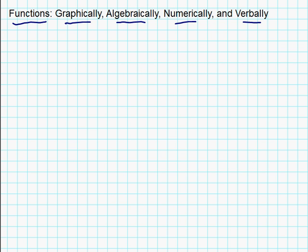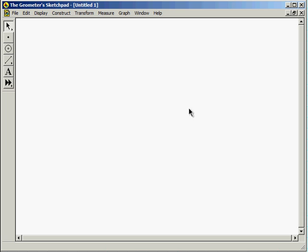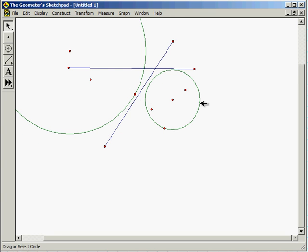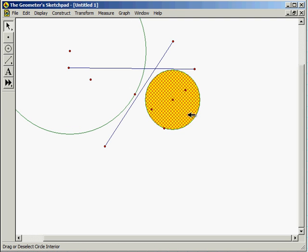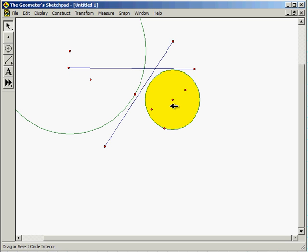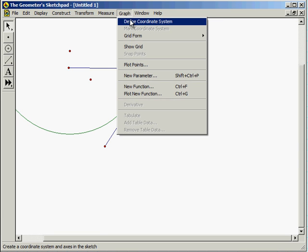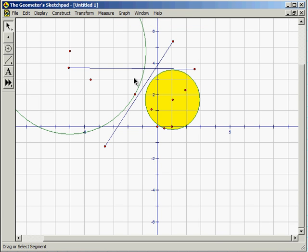Another one is Geometer Sketchpad. Now I've been using this for a number of years and this one is a commercial product. You can put points where you want, you can put line segments, circles, like for instance if I want to take the interior of this circle, I can construct circle interior and so now I can deal with that as well. Okay, there's a lot of things you're going to see me using this. By the way, you can put a graph up there and you can define functions algebraically that will show up on this graph.